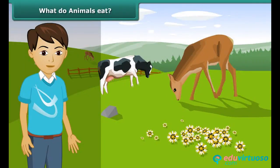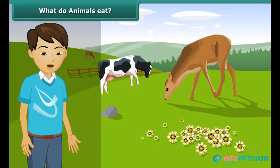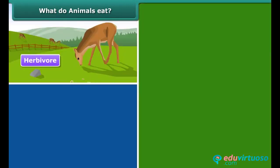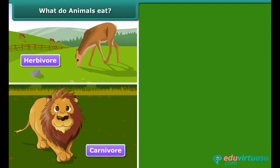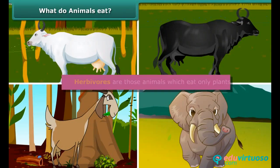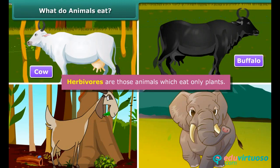Do you know that there are three types of animals on the basis of the nature of food they eat? They are herbivore, carnivore and omnivore. Herbivores are those animals which eat only plants — for example, cow, buffalo, goat, elephant, etc.